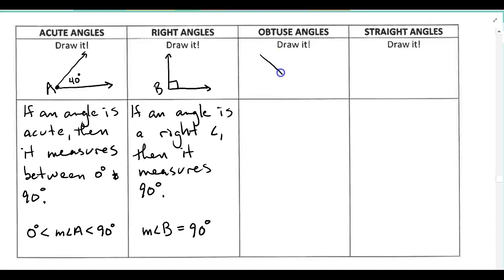So maybe you had something like this. We'll call that angle C. I could put in a measure here, let's just call it 100 degrees. Just pick some arbitrary number. And hopefully your definition, if you decided to do it on your own, says something like, if an angle is obtuse, then it measures between 90 degrees and 180 degrees.